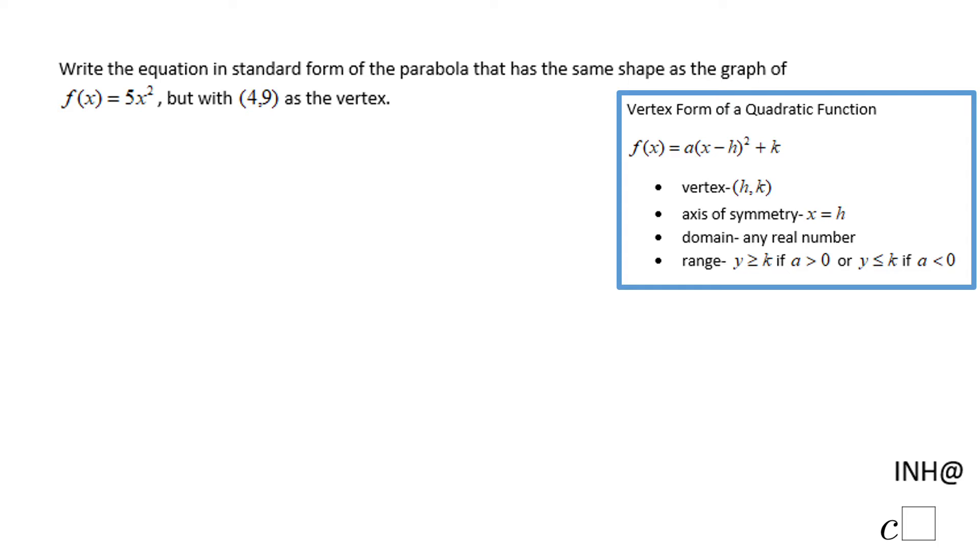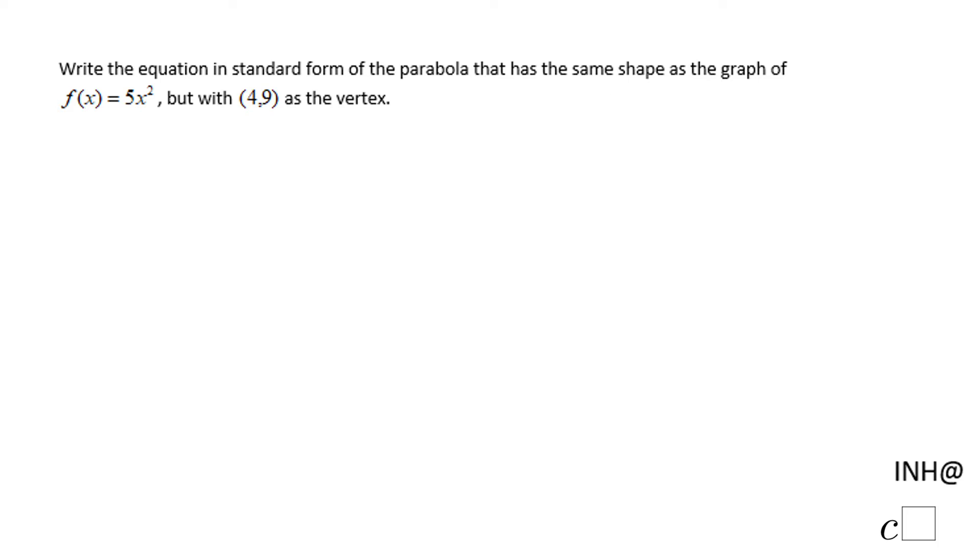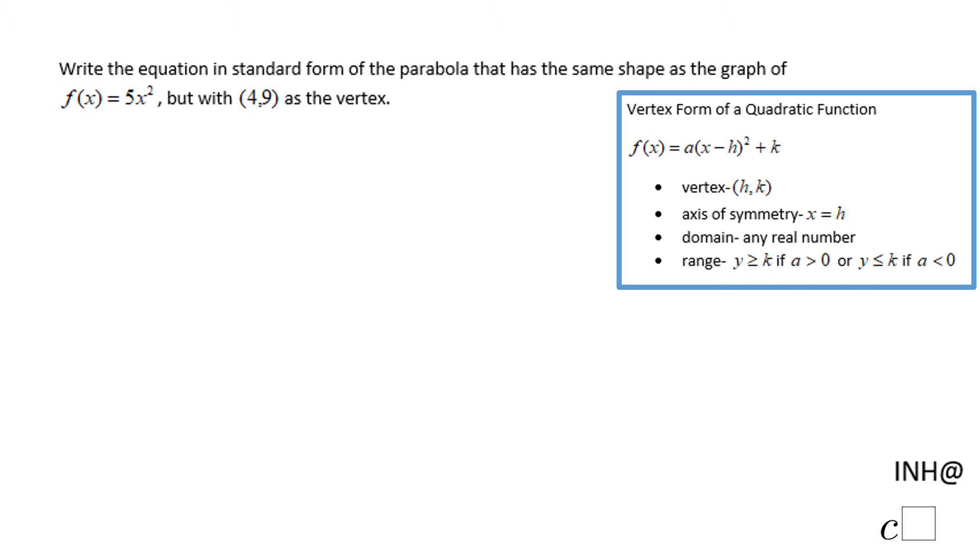So what does it mean here? It means we need to find this a, this h, and this k for our function, which I'm going to call g(x), right? So let's write that form, and now we look into what is given in this problem.